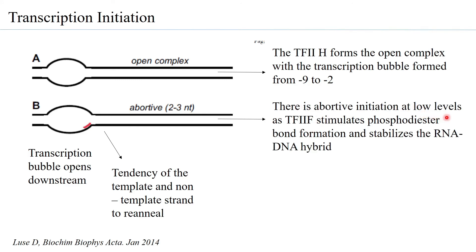There is abortive initiation at very low levels in the eukaryotic system. Unlike the prokaryotic system where the number of abortive initiations are greater, in eukaryotes it is comparatively low, because TF2F is known to stimulate phosphodiester bond formation and also stabilize the RNA-DNA hybrid.